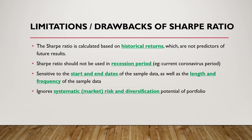Another limitation is that the Sharpe ratio somewhat ignores systematic risk, also called market risk. For example, the coronavirus is a market risk because it affects the whole market and the whole world, not just individual stocks. When we calculate the standard deviation, we are only looking at the risk of each individual stock, not the risk of the whole market.